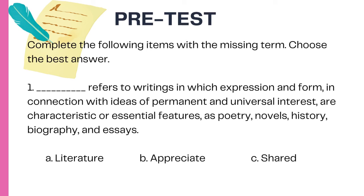Let's complete the following items with a missing term. Choose the best answer. Number one refers to writings in which expression and form, in connection with ideas of permanent and universal interest, are characteristic for essential features such as poetry, novels, history, biography, and essays.